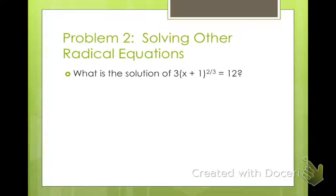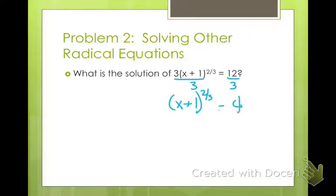Now let's solve this one. Just like what we did with radicals, you do the same thing with exponents — we want to get the exponent part by itself first. The first thing we're going to do is divide both sides by 3, giving us x plus 1 to the 2/3 power equals 4. Now, to get rid of the 2/3 power, I want to make that power be 1, so I multiply by 3/2 so the 3's and the 2's cancel. But what I do to one side I have to do to the other, giving me 4 to the 3/2 power.